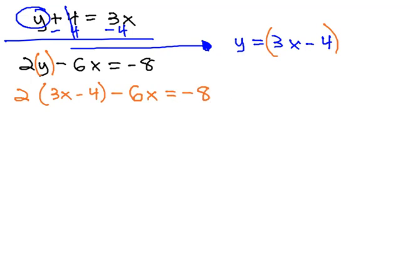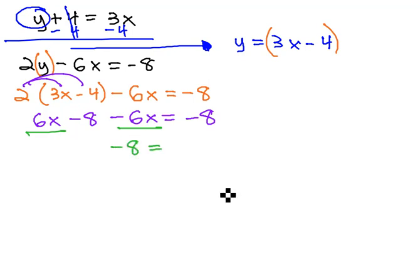Then I can solve this resulting equation. Distribute the 2 through, gives us 6x minus 8, minus 6x equals negative 8, and then we'll combine like terms. 6x minus 6x is 0. There's no x's left. We just have negative 8 on the left side and negative 8 on the right side.